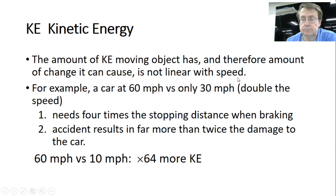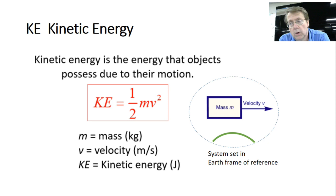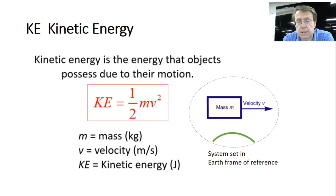To calculate kinetic energy, the formula is one-half times the mass in kilograms times the speed in meters per second squared: KE = ½mv². The mass must be in kilograms and speed in meters per second, which gives energy in joules.